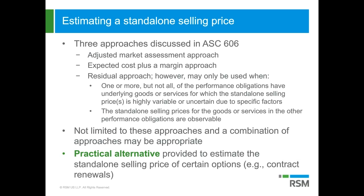The next approach is the expected cost plus margin approach, which puts more emphasis on internal factors but still considers external factors. You start with cost, add your desired margin, but you may need to adjust the resulting price — for instance, if a 25% desired margin results in a price that exceeds what competitors are charging for similar goods and services. This approach is useful in many situations, particularly where you have a clear direct fulfillment cost like a tangible product or an hourly service, but it's less helpful when the cost is unknown, such as for a new software license or specified upgrade rights.